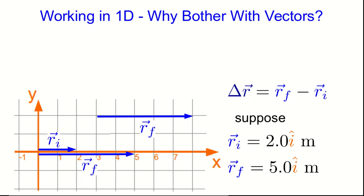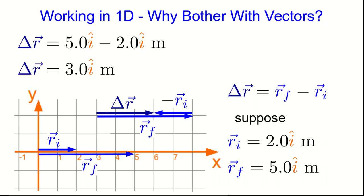To subtract them, let's take r_f, and we'll flip r_i around and put it tail-to-tip with r_f, and then delta r, the displacement, is here, working with the numbers. I have delta r as just this, and that gives 3 i-hat meters. Well, so what? Well, notice something. The magnitude of r_f was 5 meters, and the magnitude of r_i was 2 meters. And so it looks like I could have just subtracted their magnitudes to get the correct magnitude, 3 meters, of delta r. Can I always do this?